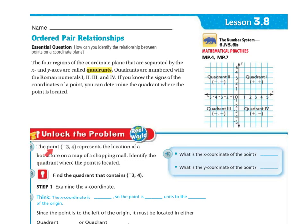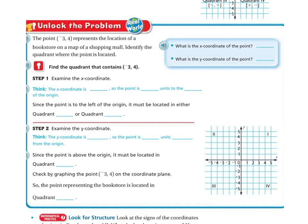Let's unlock the problem. The point negative 3 and 4 represents the location of a bookstore on a map of a shopping mall. Identify the quadrant where the point is located. So what is the x-coordinate of the point? Right here is my x-coordinate, negative 3. What is the y-coordinate? Positive 4.